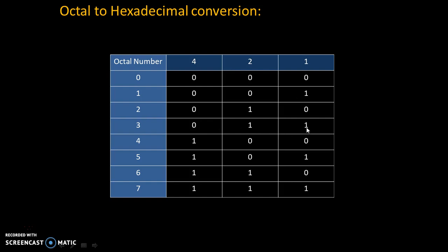Whichever bit position is needed, we will make that 1, and the bit which is not needed, we will make it 0. Let's take the example of 5 — 5 is 4 plus 1, so the code is 101. Let's take the example of 7 — 7 is 4 plus 2 plus 1, so the code is 111.